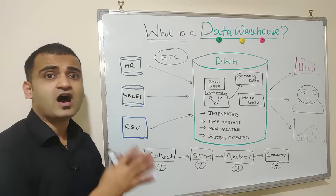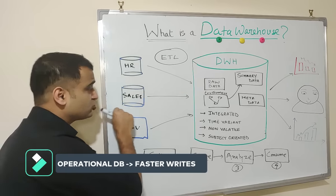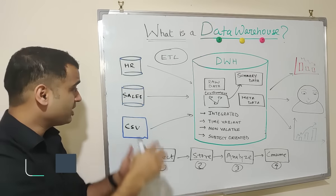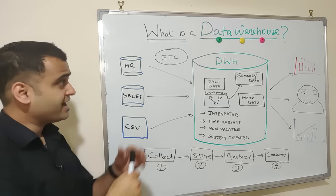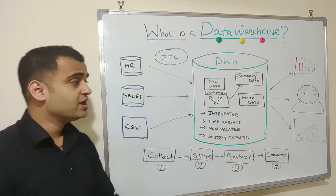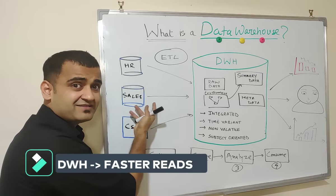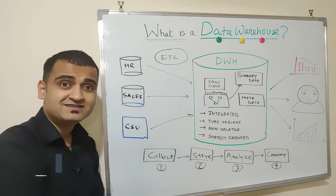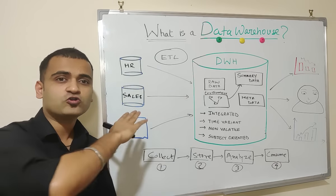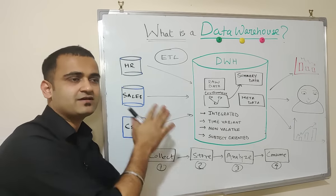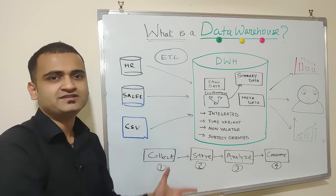All these databases are made for faster writes because the objective is to store that transaction as quickly as possible. But the same data then pushed into the data warehouse and the objective of data warehouse is to make faster reads because you are analyzing this data for not only one transaction, you might be analyzing this data for years and years of data accumulated across various dimensions like country, geography, customer, employee, all these stuff.